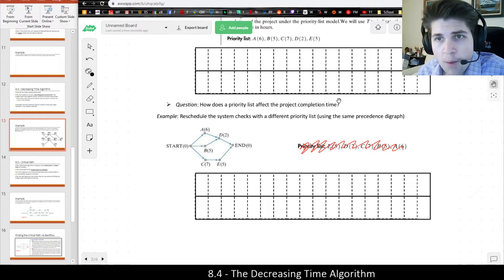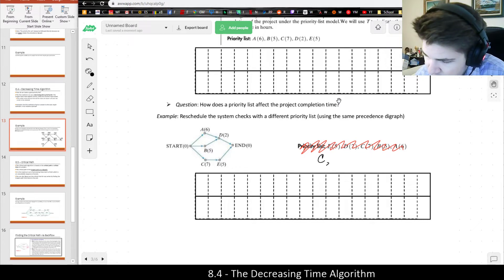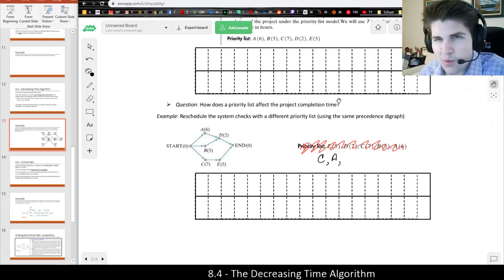So here our priority list would go C is the longest task. That'd be first up. Then A is six, which would come next. Then B and E are both five. And this would be a question of which one of these would be better? So I'll go ahead and put B then E, but we can consider either way and see which one comes out better if we want. Then D, last of all. And that would be our priority list.